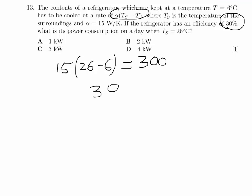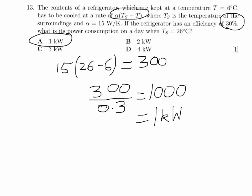Plug in those numbers and we find that we need a power of 300 watts. But we're told that the efficiency of the refrigerator is 30 percent, so we just need to divide by 0.3. So 300 divided by 0.3 is a thousand, which is one kilowatt. So it's answer A.